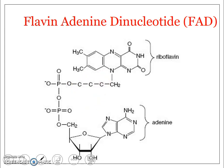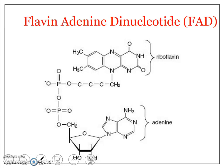The third reason is that the connection between the flavin and ribitol — the N-C bond — is not a glycosidic bond, whereas in the AMP portion, that N-C bond is a glycosidic bond. So, for all three reasons — ribitol instead of a pentose sugar, flavin is not a nitrogenous base, and absence of a glycosidic bond — we can conclude that the flavin mononucleotide or flavin ribitol monophosphate is a pseudonucleotide.